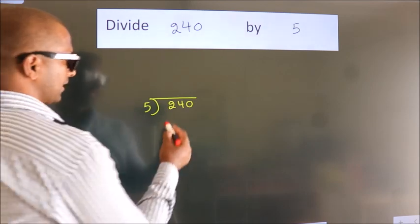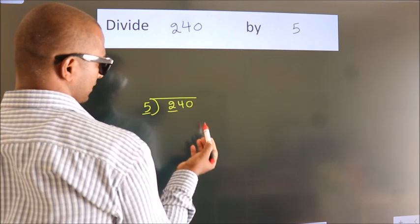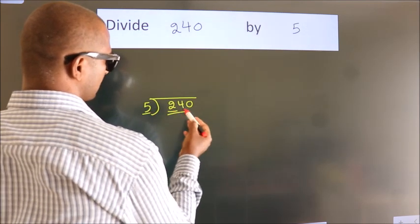Next. Here we have 2. Here 5. 2 is smaller than 5. So we should take 2 numbers. 24.